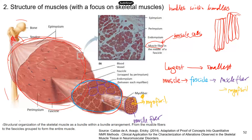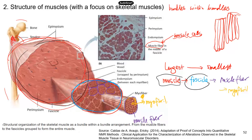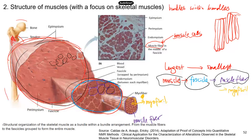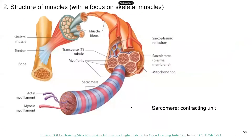Let's go over everything one more time. The largest bundle is an individual muscle. Within this muscle, you have many smaller bundles called fascicles. Each fascicle is made up of many smaller bundles called muscle fibers. Within each muscle fiber, you have even smaller bundles — this is the subcellular level — called myofibrils. So that's the organization for muscles: muscle → fascicles → muscle fibers → myofibrils.